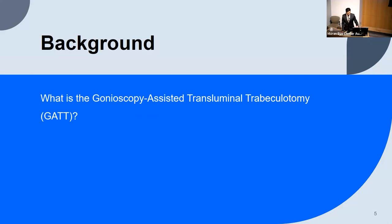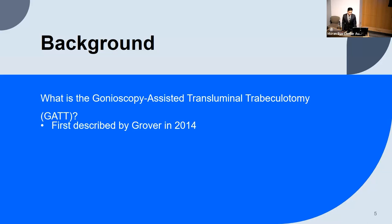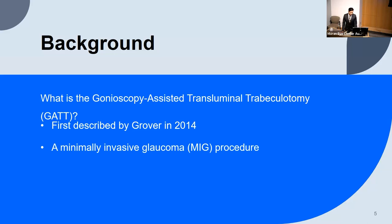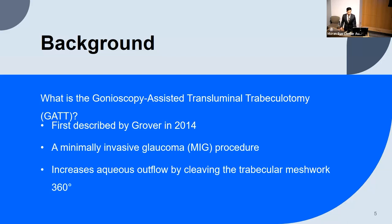This is a good segue after the previous presentation by Cole Swiston. This procedure was first described just under a decade ago by Grover in 2014. It is considered a minimally invasive glaucoma procedure. It decreases intraocular pressure by increasing aqueous outflow, and does so by cleaving the trabecular meshwork 360 degrees all the way around the angle. This is performed ab interno, as compared to the traditional ab externo approach.